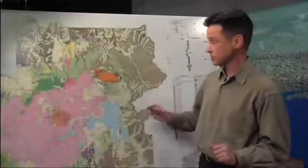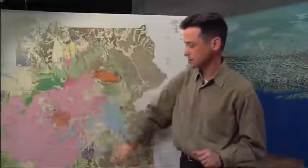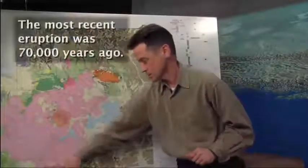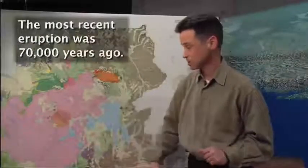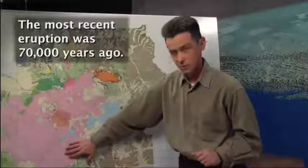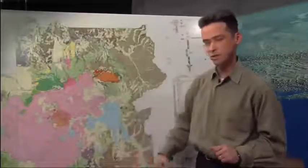Since the eruption of the Lava Creek Tuff 640,000 years ago, we've had a lot of eruptions within the caldera, probably 80 different eruptions both within the caldera and outside the caldera. Many of them are these really large lava flows. The most recent lava flow was down here on the Pitchstone Plateau 70,000 years ago, and it's a really enormous eruptive unit. These are big eruptions, but they're just within Yellowstone and they don't appear to be highly explosive.